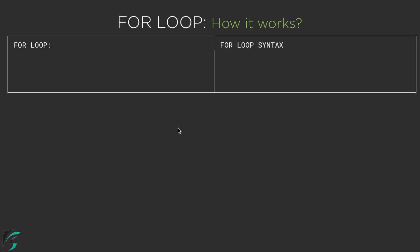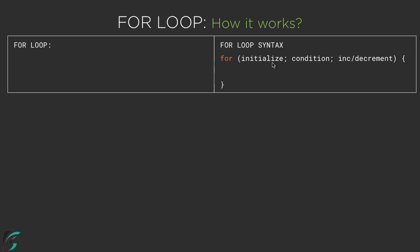First of all, let's check out the syntax of the for loop. Here on the right hand side I will show you the syntax, and on the left hand side I will show you the code snippet. The syntax of the for loop is: 'for' followed by a space, as per the coding convention, followed by bracket open and bracket close. In between, I have three parameters — or you can say three arguments — and these values are separated with the help of semicolons.